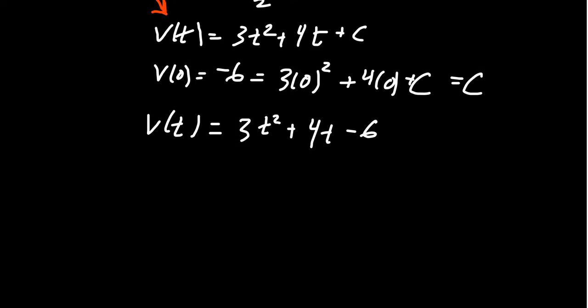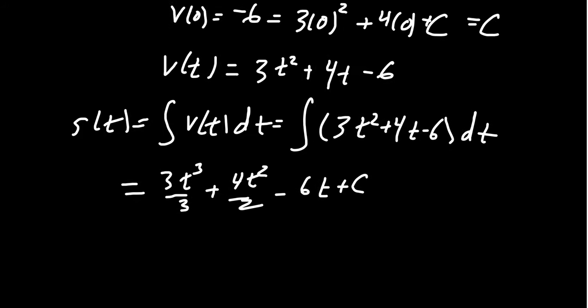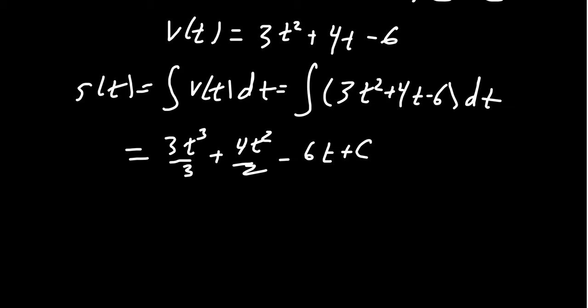Now that we have the velocity function, we can then look for position. Because position s(t) will equal the integral of velocity—it's the antiderivative of velocity. So taking the antiderivative of this 3t² + 4t - 6 dt, by the power rule we're going to get 3t³/3 + 4t²/2 - 6t + another constant, a +C there. I'm going to just use the same +C as before, even though we already had a +C, but again it's just a constant we have to figure out right now. And if you remember from what we saw above, the initial position was s(0) = 9 cm.